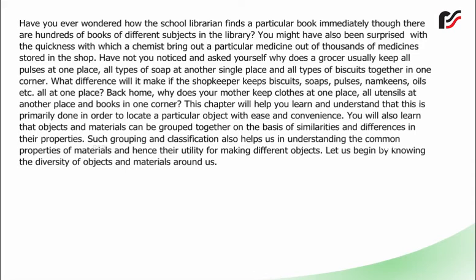What difference will it make if the shopkeeper keeps biscuits, soaps, pulses, namkeens, oils, etc. all at one place? Back home, why does your mother keep clothes at one place, all utensils at another place and books in one corner? This chapter will help you learn and understand that this is primarily done in order to locate a particular object with ease and convenience. You will also learn that objects and materials can be grouped together on the basis of similarities and differences in their properties. Such grouping and classification also help us in understanding the common properties of materials and hence their utility for making different objects.